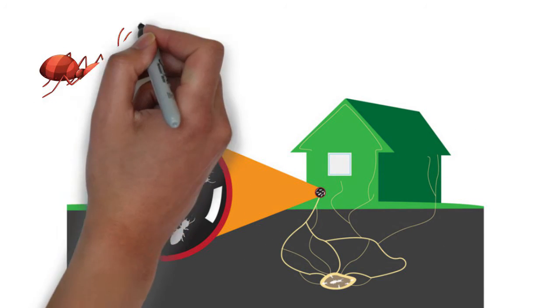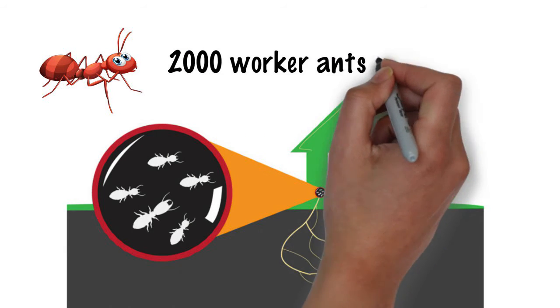It is not unusual for a nest to consist of 2,000 worker ants per queen.